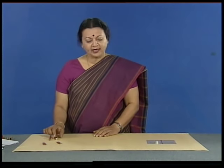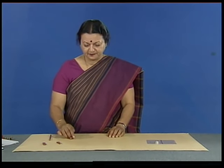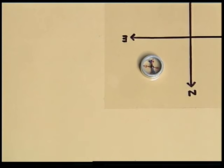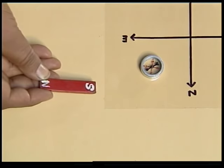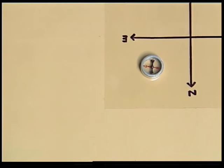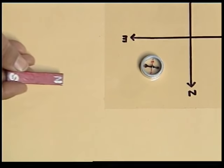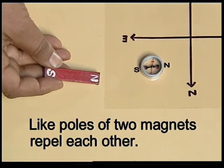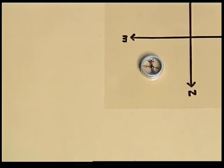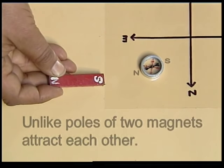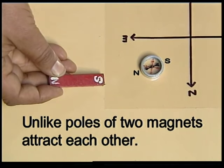Now what would happen if we bring a magnet close to this compass needle? The needle gets deflected. Now if we bring the other pole of the magnet close by, this time the needle gets deflected in the opposite direction. Do you know why this happens? When we bring the north pole of the magnet near the tip, the tip moves away because like poles of two magnets repel each other. On the other hand, when we bring the south pole of the magnet near the tip, the tip moves closer because unlike poles of two magnets attract each other.